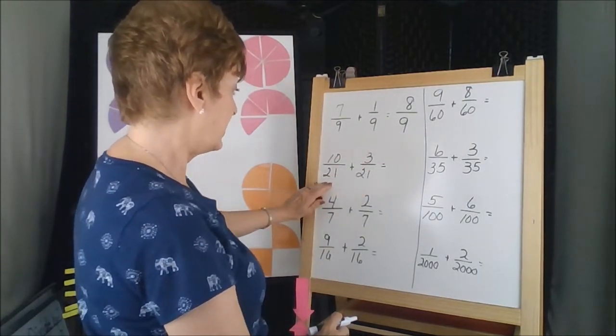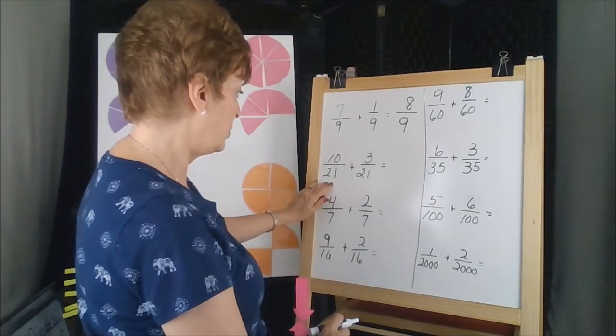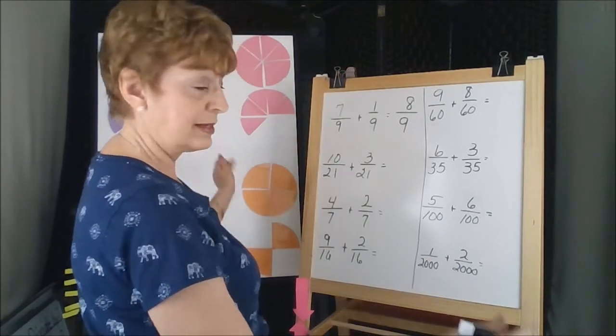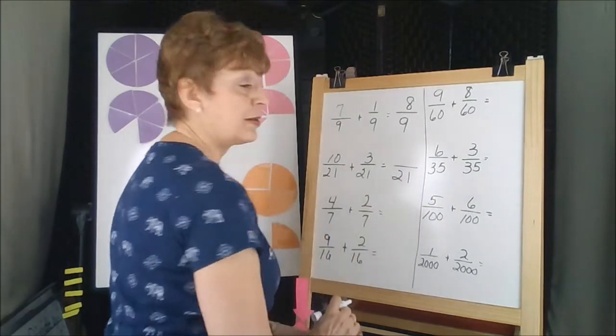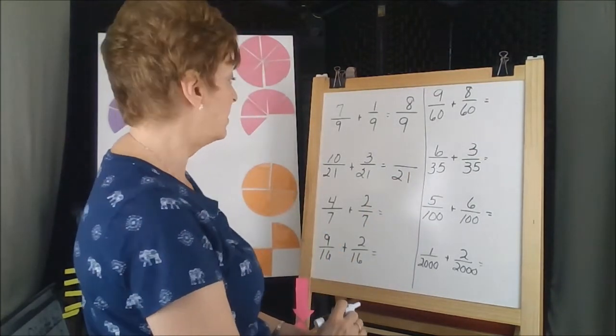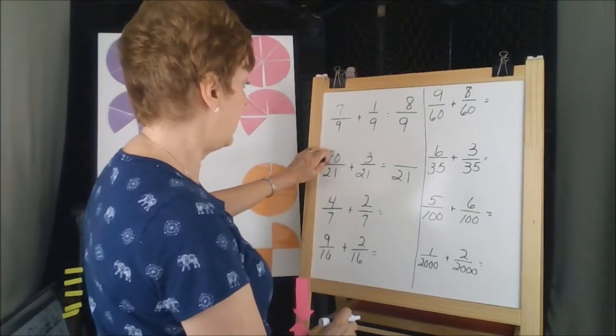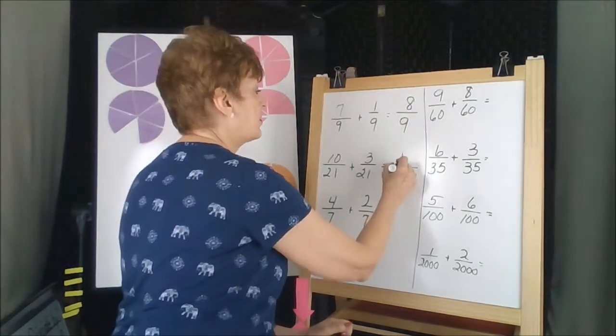Are the size of the pieces the same? Here we have 21 and 21. So that's good. We can just copy that over because it's the same size piece. And then add the numerators. 10 plus 3 is 13.